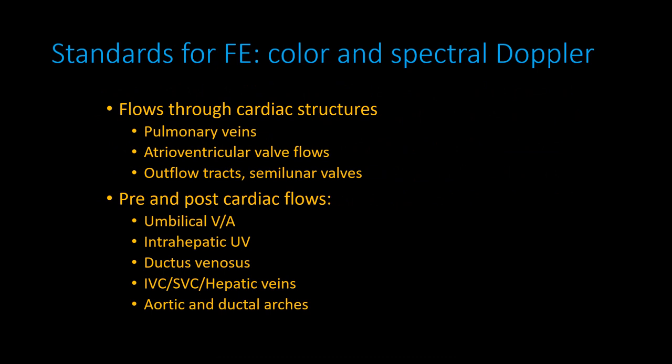For the standard fetal echo color and spectral Doppler exam, we look at flows through all cardiac structures, including the pulmonary veins from either side, the atrioventricular valve inflows, the ventricular outflow tracts, and semilunar valve outflows. We also look at pre- and post-cardiac flows: the umbilical venous and arterial circulation, the intrahepatic umbilical vein before the ductus venosus, the ductus venosus flow pattern, the IVC, the SVC, the hepatic veins, and the aortic and ductal arches.